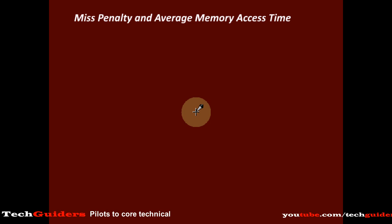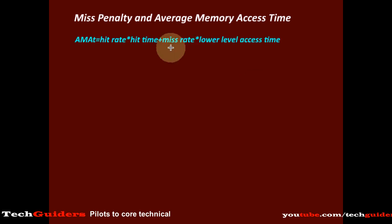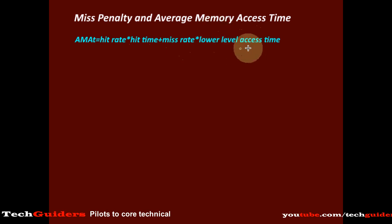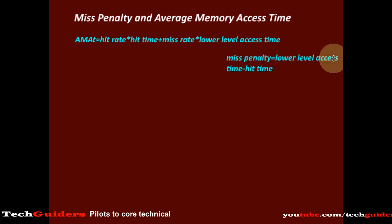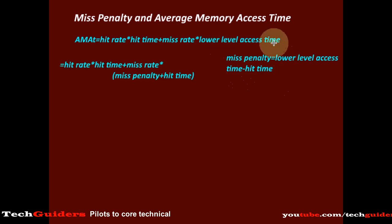Now, what is average memory access time in terms of miss penalty? The general equation for average memory access time is: hit rate times hit time, plus miss rate times lower level access time (or the overall miss time). Miss penalty is the difference between the lower level access time and the cache access time, or the difference between the lower level access time and the hit time. We can express the lower level access time in terms of miss penalty as: miss penalty plus hit time.